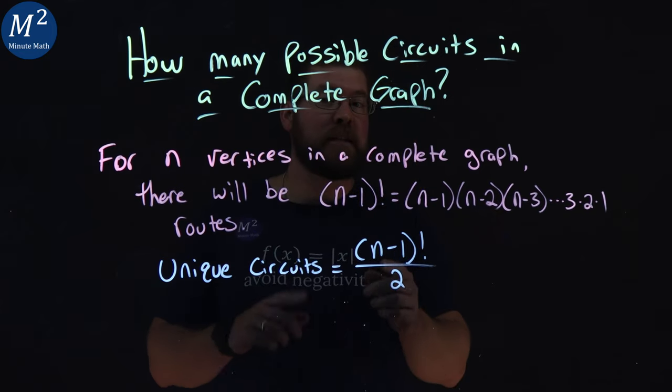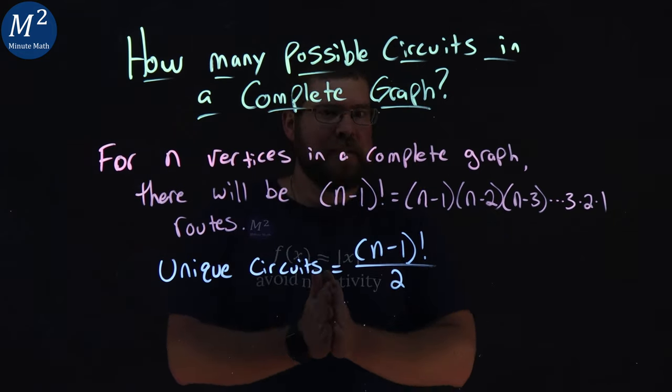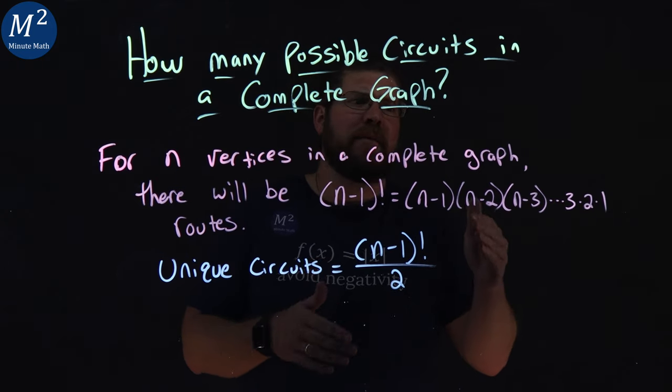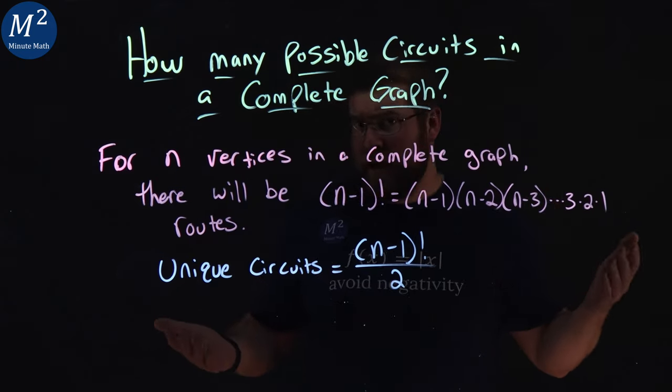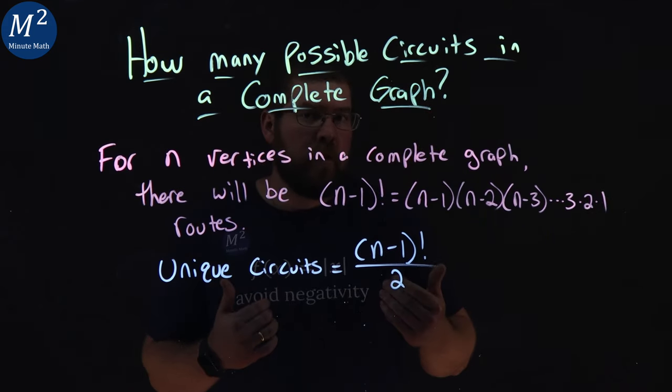There will be n minus 1 factorial routes. n minus 1 factorial is n minus 1 times n minus 2 times n minus 3, as you keep going down, 2, 3 times 2 times 1. Now, be careful with this.